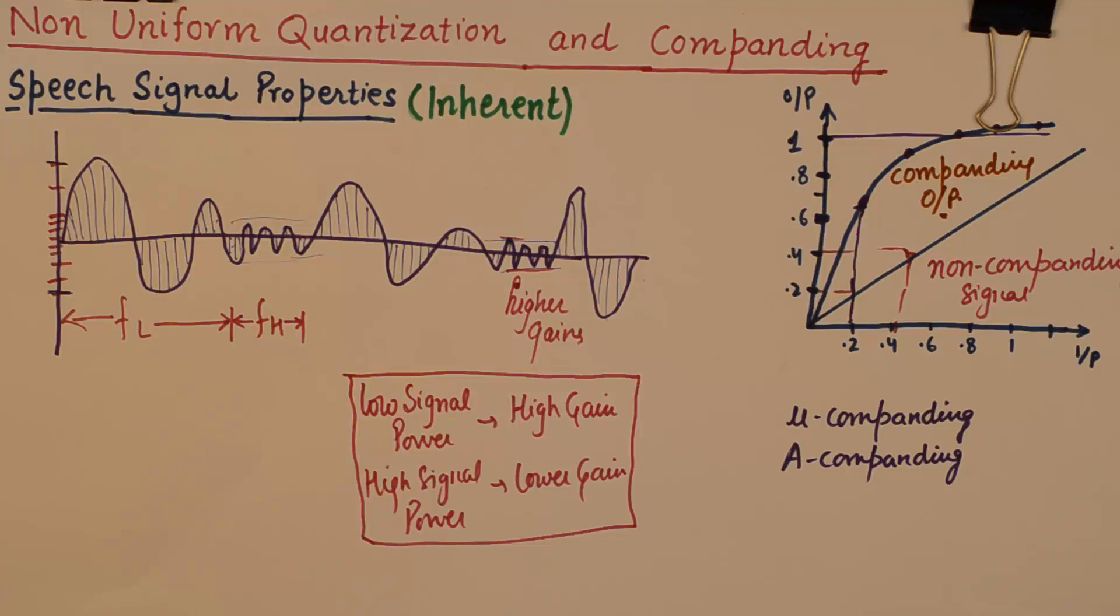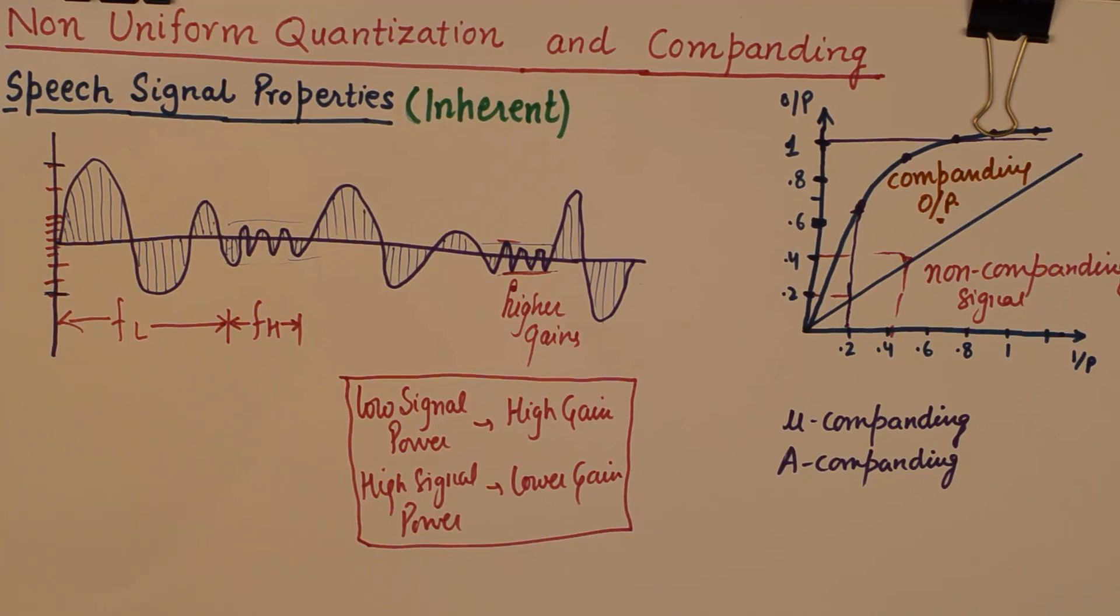Otherwise, signals with inherently higher signal power would have a higher signal to noise ratio. On the contrary, signals with low signal power inherently will remain at the lower spectrum of the signal to noise ratio. This parity is reduced or is taken care of or is eliminated by a concept known as companding.